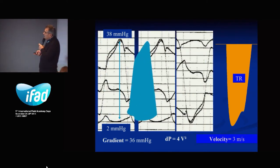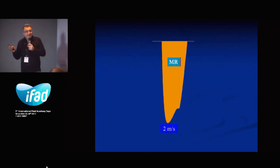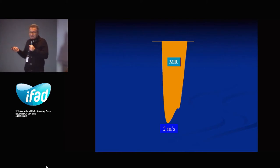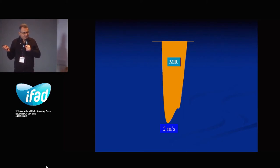Just to be sure you understand this well — a resident recorded a velocity of two meters per second for a mitral regurgitation. Is this possible? Is there a problem? Convert the two meters per second into a pressure gradient: four times two squared equals 16 millimeters of mercury.